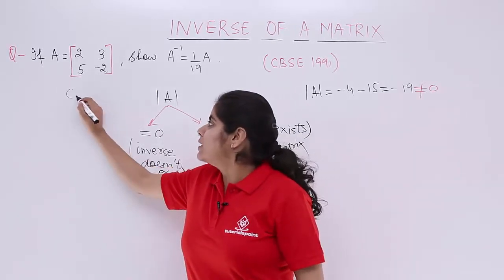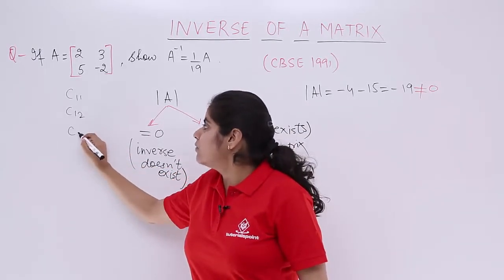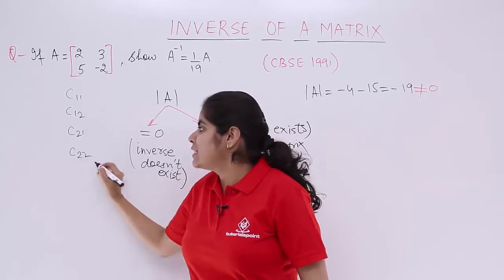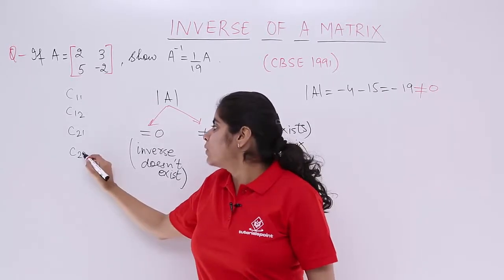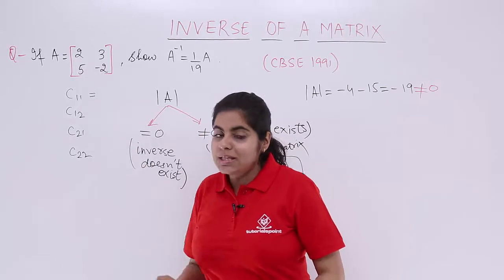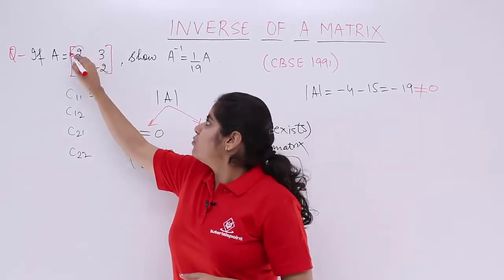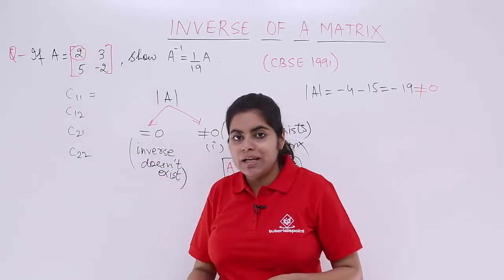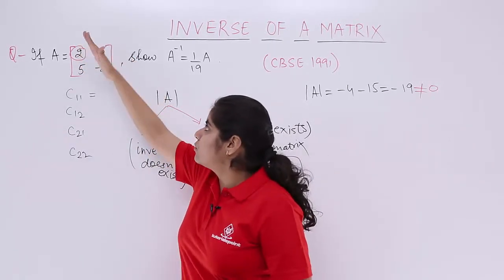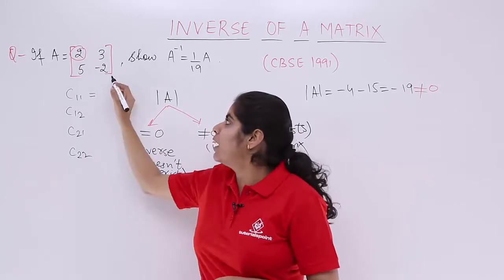How to find out the co-factors? Co-factors can be listed as C11, C12, C21 and C22. C11 means co-factor of the first row, first column element. First row, first column is 2. Finding the co-factor means ignoring the first row, ignoring the first column. You have minus 2.